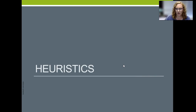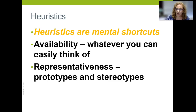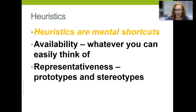Hey there class, welcome back. A little mini lecture on heuristics and then we're going to get into our longer segment on intelligence. A heuristic is a mental shortcut — a quick and dirty little tool that we use to come to an understanding, a decision, or an action quickly. I want to share two different heuristics: the first is called the availability heuristic, and the second is the representativeness heuristic.